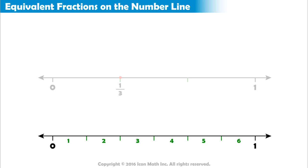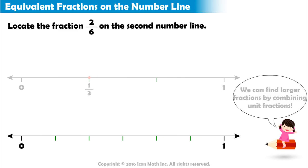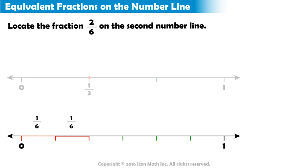Let's say we want to locate the fraction two-sixths on this new number line. We know that we can find larger fractions by combining unit fractions. So we start from 0 and move across exactly two parts. Joining two equal parts on the number line means combining two copies of one-sixth. And this gives us the fraction two-sixths. So we label the end point as two-sixths.